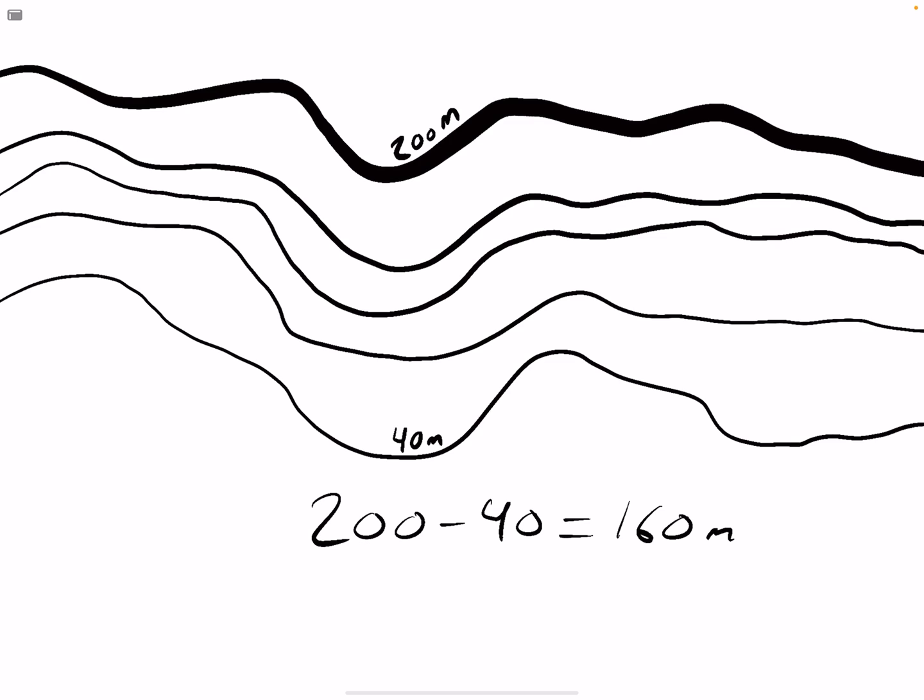We have 40 meters jumping up once, twice, three times, and four times. So we made four jumps, or there's four gaps in between these contour lines.